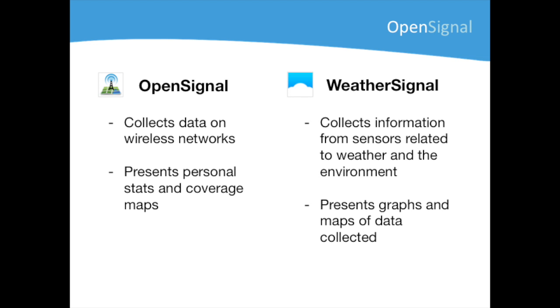OpenSignal is an app that measures the quality of mobile networks, signal strength, data speeds and other variables. It works by the principle of crowdsourcing, meaning that the data collected by our users can be turned into independent coverage maps and network rankings.